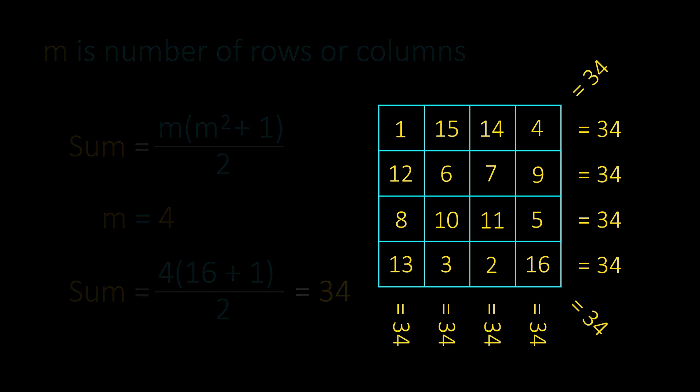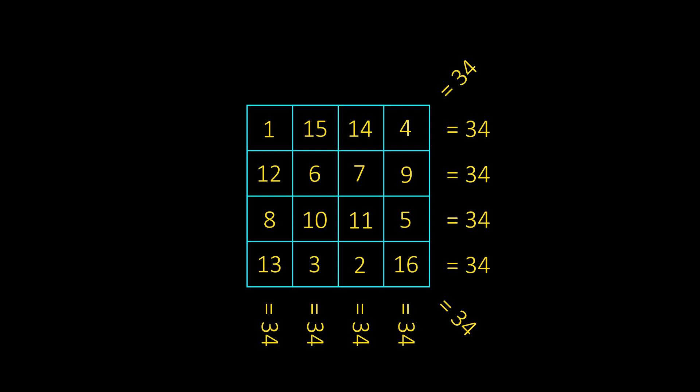So if you add each row, column, or diagonal, then the sum is always 34.